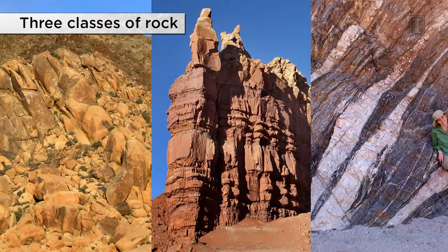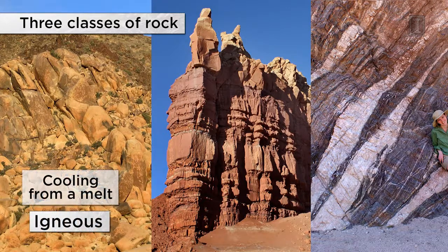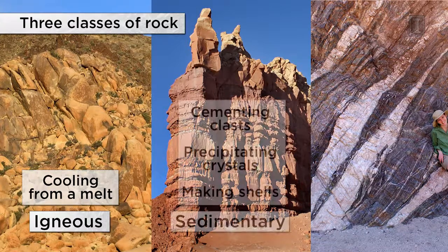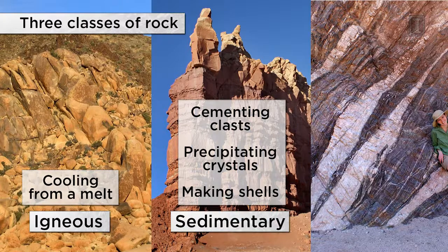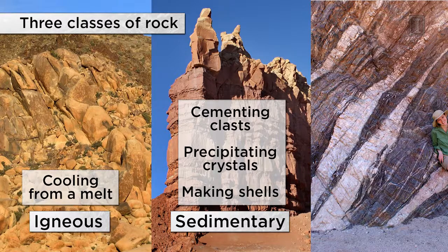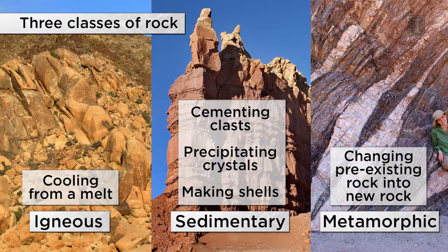Geologists divide all rocks into three simple categories based on how they form. Igneous rocks are rocks that formed ultimately by cooling from a melt. Sedimentary rocks form either by cementation of individual clasts — those are called clastic rocks — or by precipitation directly from water solutions near or at the surface of the earth, or by organisms that extract ions out of solution and build shells from them. The final kind are called metamorphic rocks. Metamorphic sounds like metamorphism for a good reason: the root of the word means to change, and metamorphic rocks are formed by changing pre-existing rocks, generally in the solid state by the migration of atoms.